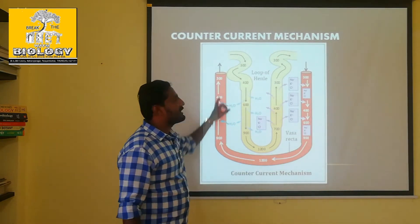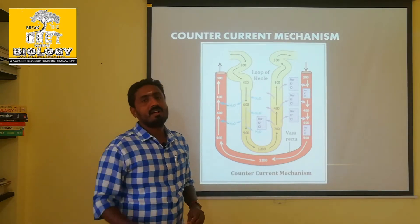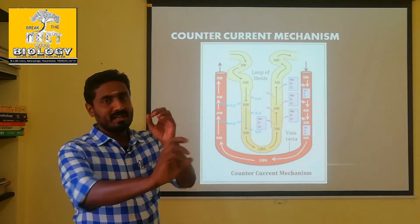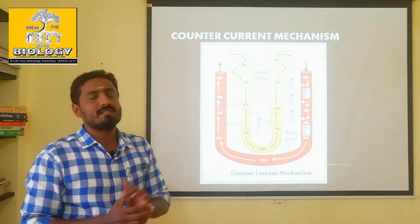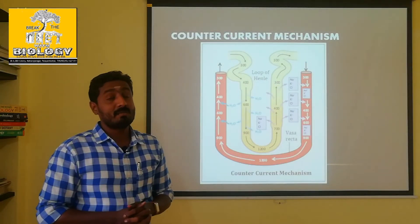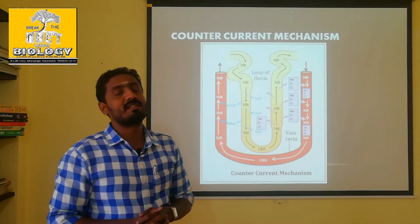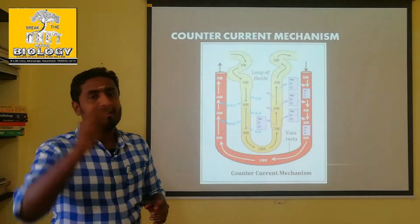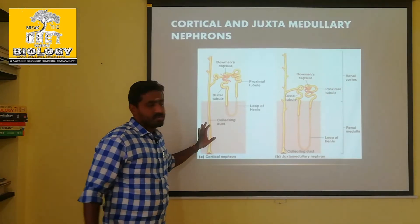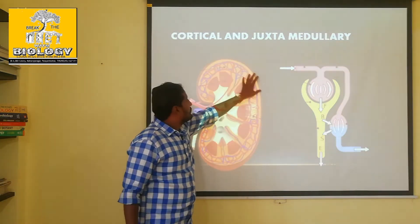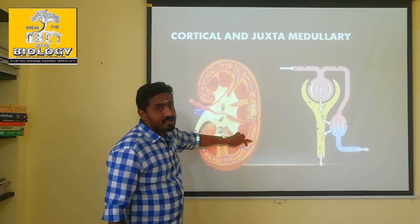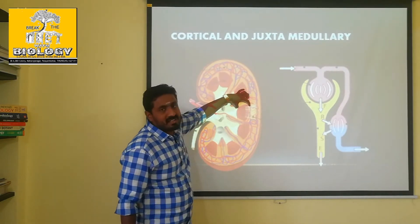In the descending loop and ascending loop, there is a blood vessel called Vasa recta. Already the cortical region and medullary region are present. In the longitudinal section of the kidney, the cortex region and medullary region are visible.